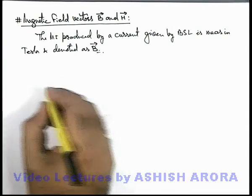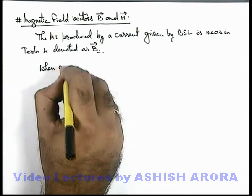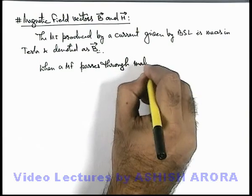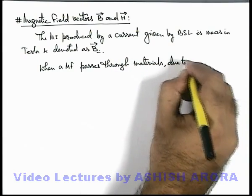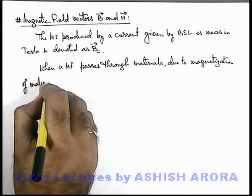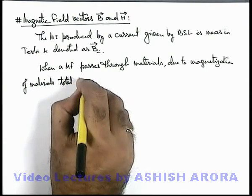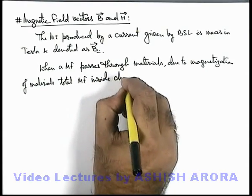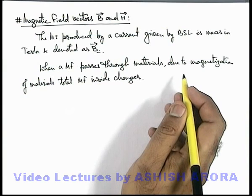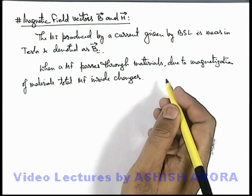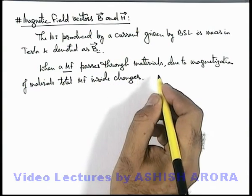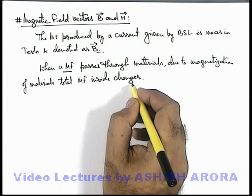But when we talk about magnetization of materials, when a magnetic field passes through materials, due to magnetization of materials, the total magnetic field inside changes. This we also discussed in the previous section — that once a material is magnetized, we can calculate its intensity of magnetization and in turn calculate the magnetic induction due to the magnetization of the material. So when an external magnetic field is applied onto a material, the total magnetic field inside changes due to magnetization of the material.